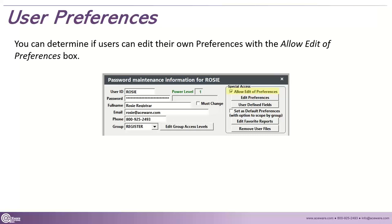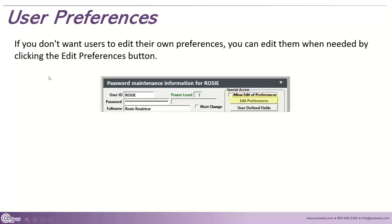Before a user edits their own preferences, the person behind the curtain is over in Password Maintenance. As an admin, when you're setting up or reviewing a user's access, you can determine whether they can edit their own preferences simply by checking a box. You can also edit their preferences for them — sometimes that's necessary, especially if you are not allowing someone to edit their own preferences. If you don't want them to, just uncheck the box.